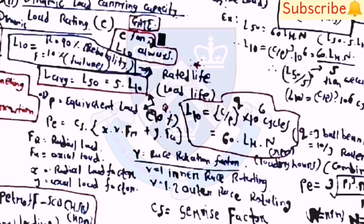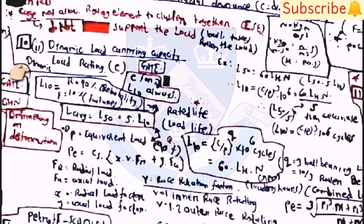P_e = C_s·(X·e·F_r + Y·F_a). Median life L_50 = 5·L_10. At L_10, reliability R = 90% and failure = 10%. L_10 = 60·L_h·n, where L_h = life in hours and n = speed in rpm.